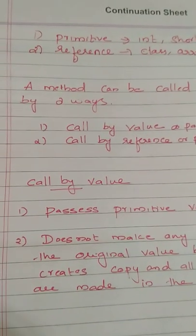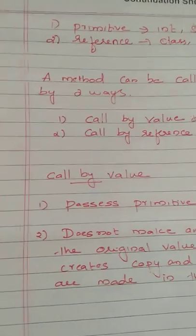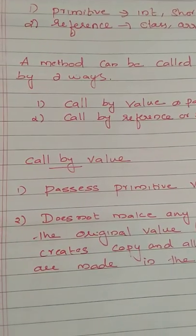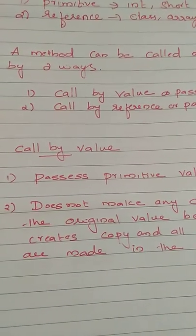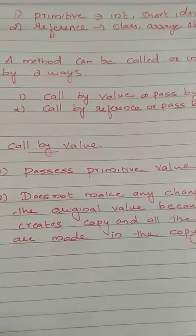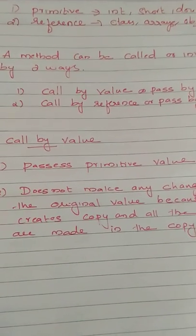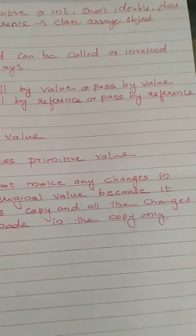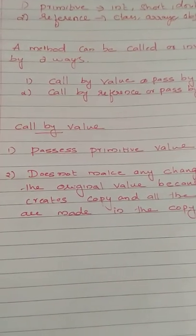A second main difference relates to actual and formal parameters. In call by value, it creates a copy and all the changes are made in the copy only. This does not affect your original value because it is making a copy and all changes are made in the copy only.